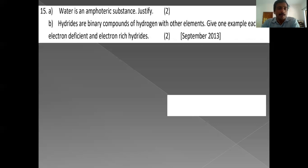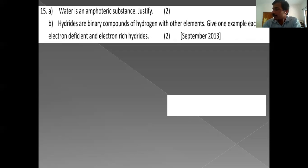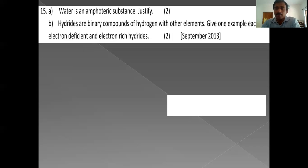What is an amphoteric substance? An amphoteric substance is one that can show both acidic and basic characters. Water is an amphoteric substance — it behaves as an acid in the presence of strong bases and as a base in the presence of strong acids. Example equations: H2O + H2O → H3O⁺ + OH⁻; NH3 + H2O → NH4⁺ + OH⁻; H2O + HCl → H3O⁺ + Cl⁻.